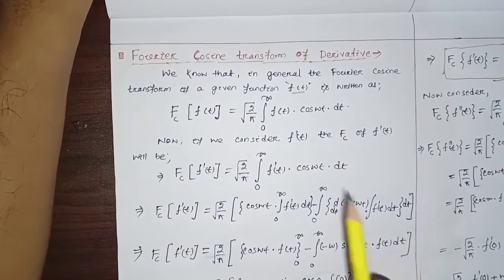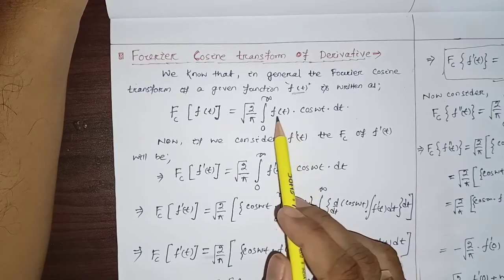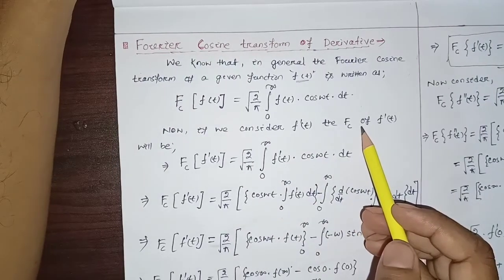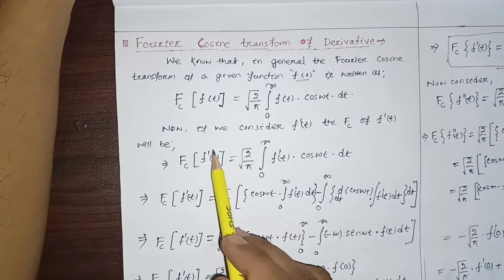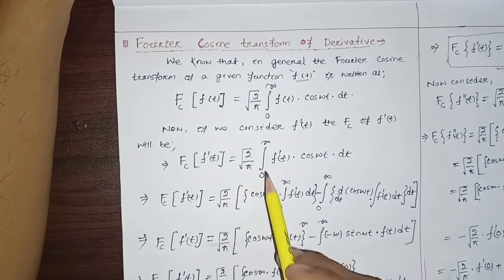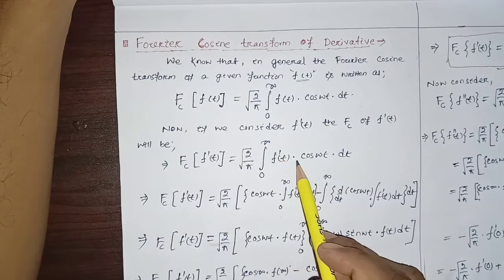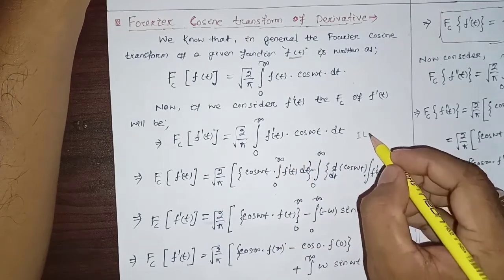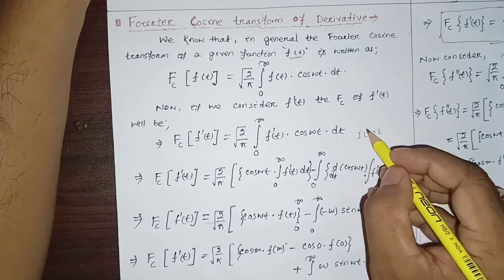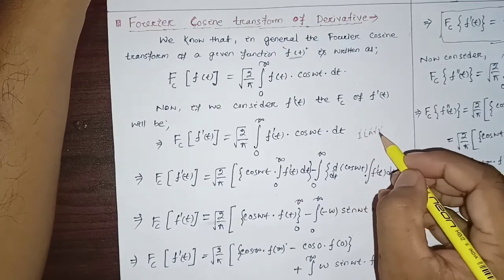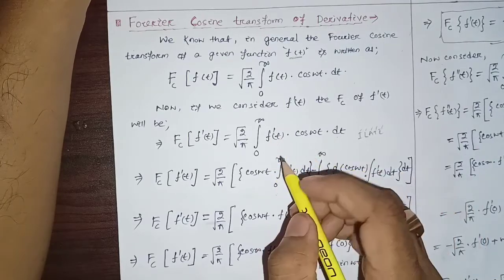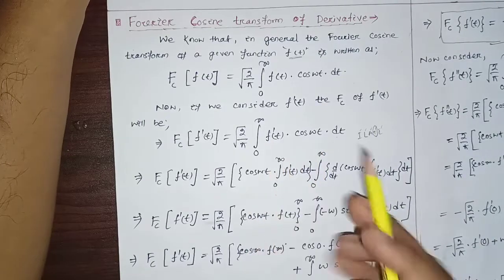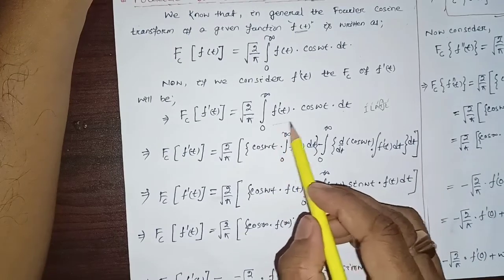Now we have to consider the first order derivative of f(t), which is f'(t). The Fourier Cosine Transform applied over this first order derivative will be equal to √(2/π) · ∫₀^∞ f'(t) cos(ωt) dt. Here we have to apply integration by parts. Using the ILATE rule — inverse, logarithmic, arithmetic, trigonometric, exponential — since f(t) is unknown, trigonometry is taken as the first function, so cos(ωt) is the first function and f'(t) is the second function.